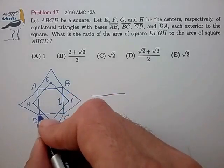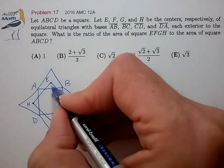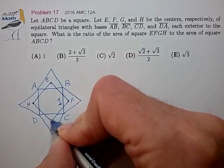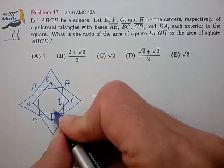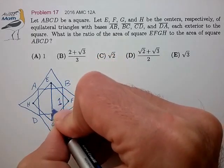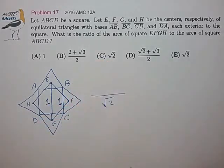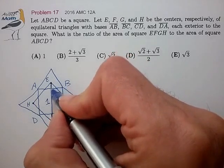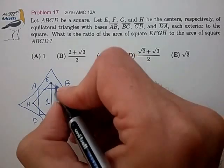So the diagonal of ABCD, that's pretty easy, that's just radical 2. We can find the diagonal EG by taking these two segments and adding them to the side length of AB. That's again just length 1.